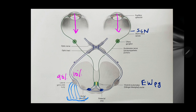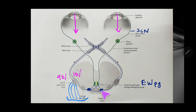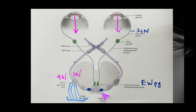Whenever there is light in either of the eyes, there will be constriction. Similarly, if the visual impulse reaches the right eye, it will also cross and the effectors will reach both sides — the Edinger-Westphal on both sides — so there will be constriction in both eyes. Both pre-tectal nuclei intercommunicate with the help of interneurons via a commissural band.